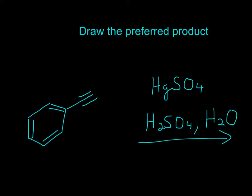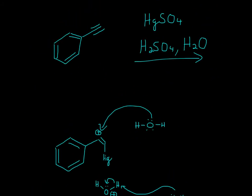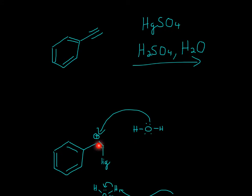So the first thing that will happen is the Hg will attack the triple bond. So we will have the triple bond become a double bond, an alkene. Hg is attached right here and the positive charge is attached at the secondary carbon.